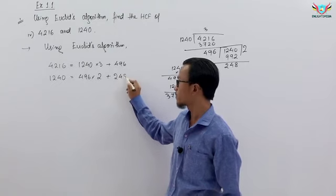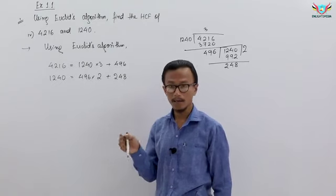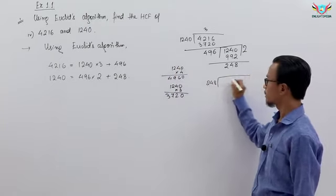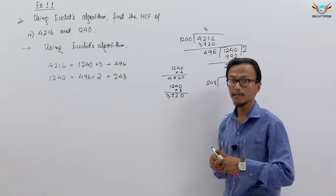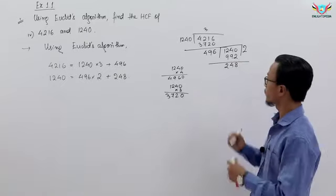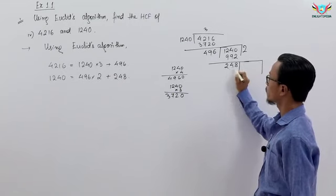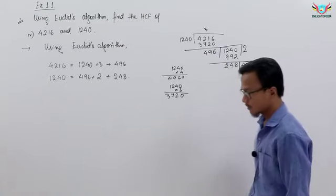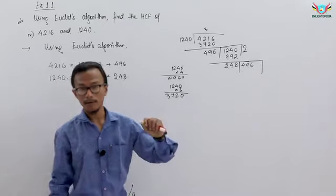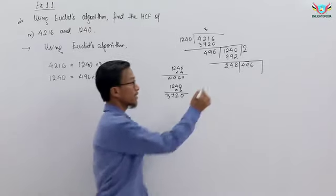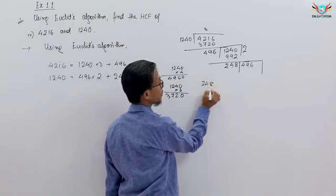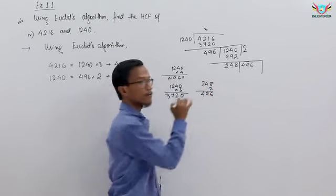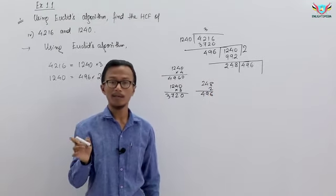So it will be 248. Remainder 0, so we have to multiply again. We have 496. Let me write 496 here, 248. Multiply with 2, 2 times 8 is 16, 2 times 4 is 8, 1 carry, and 2 times 2 is how much? 4. Exactly, we have 496 multiply with 2.